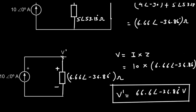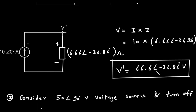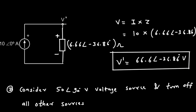Now we can find V' using Ohm's law: voltage equals current times impedance, V equals I times Z. V' equals 10 at an angle of 0 degrees times 6.66 at an angle of negative 36.86 degrees. We multiply the magnitudes: 10 times 6.66 equals 66.6. We add the angles: 0 plus negative 36.86 equals negative 36.86 degrees. So V' is 66.6 at an angle of negative 36.86 degrees volts. This is the contribution from the current source.